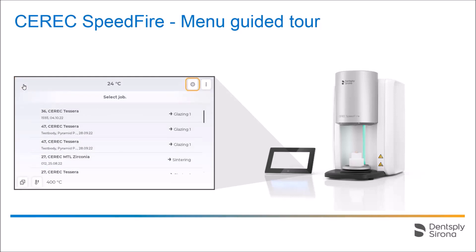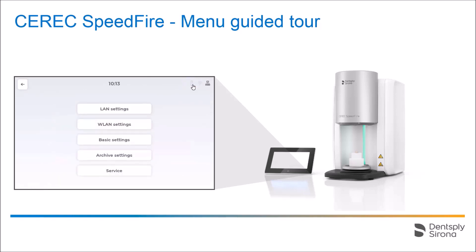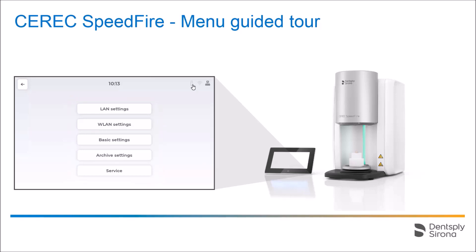Now we switch to the settings menu. This area includes sub-menus about the network settings, service features, and more. We will take a detailed look at each of them.